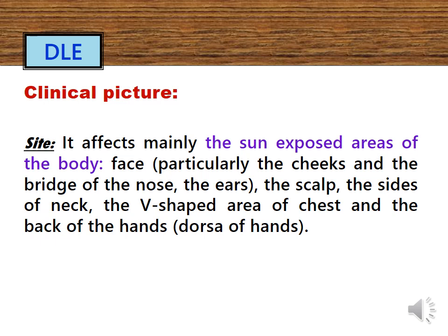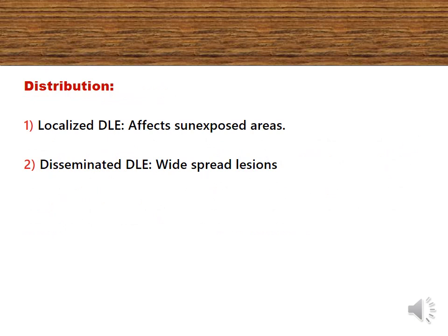The lesions of DLE occur in the sun-exposed areas of the body, mainly the face, the scalp, the sides of the neck, the V-shaped area of the chest, and the back of the hands. It may be localized, affecting the sun-exposed areas only, or disseminated DLE, affecting both sun-exposed and unexposed areas.